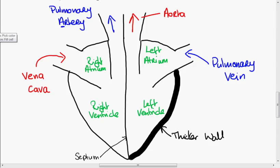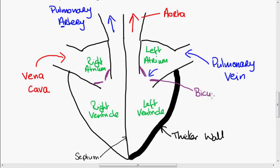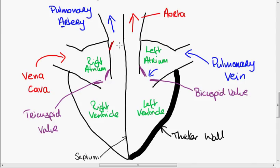The next thing is the valves. We've got valves here which prevent the backflow of blood within the heart. If blood is being pushed from the atrium into the ventricle, it will push these valves open and the blood will flow into the ventricle. But if the blood tries to go back, it will push these valves closed — therefore the valves prevent the backflow of blood. This valve here is called the bicuspid valve, and over here we have the tricuspid valve. We also have another set of valves where the blood leaves the heart through the arteries — these are called the semilunar valves. They prevent the blood from flowing back into the heart.